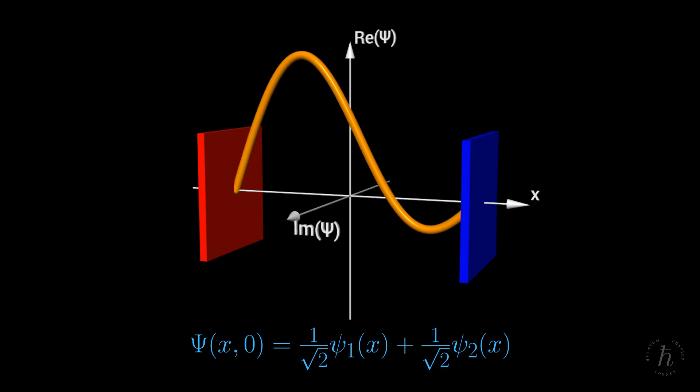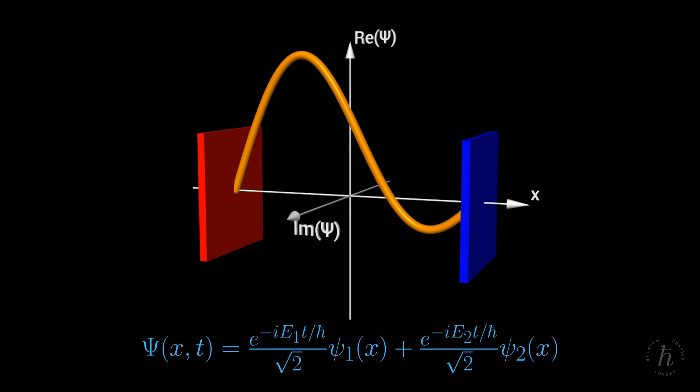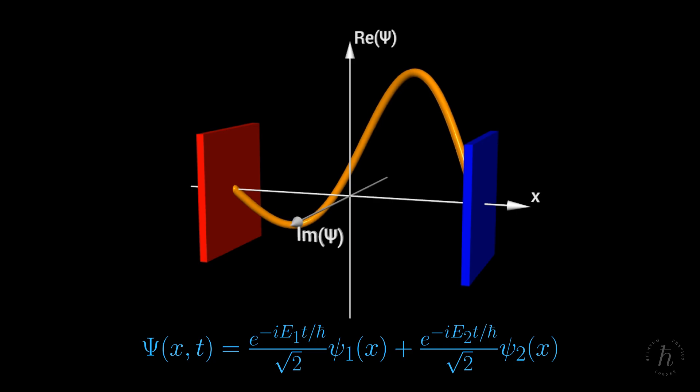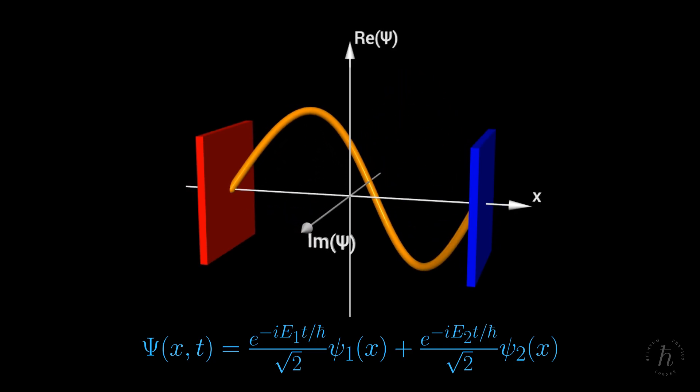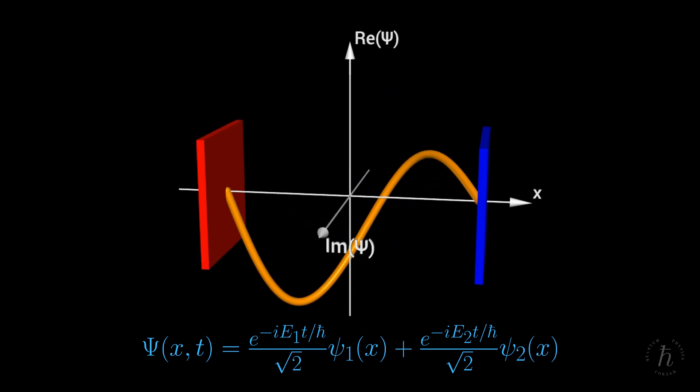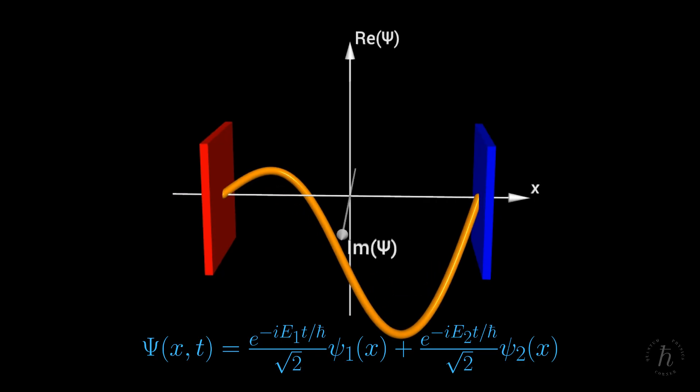This superposition state is not stationary. Over time, each component acquires a different phase, proportional to its energy. This gives rise to an intricate dance of the resulting time-dependent wave function, representing the oscillatory motion of the quantum particle between the two confining walls.